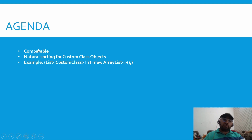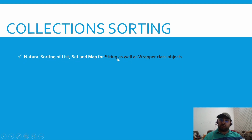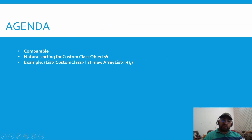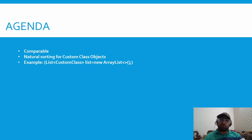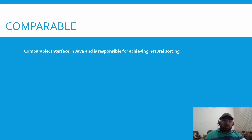Now let us understand what we'll be covering. First, we'll understand what Comparable is, and then we'll discuss natural sorting for custom class objects. In the last lecture we discussed natural sorting for String and wrapper class objects; this time we'll discuss natural sorting for custom class objects. A custom class is a class defined by the user. If we have a list of custom class objects and we want to sort them, natural sorting won't work by default — we'll have to implement Comparable.